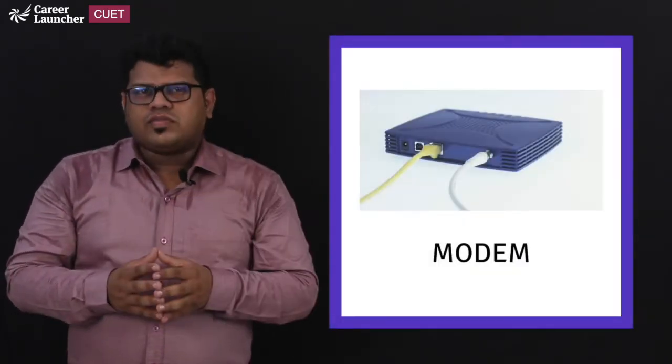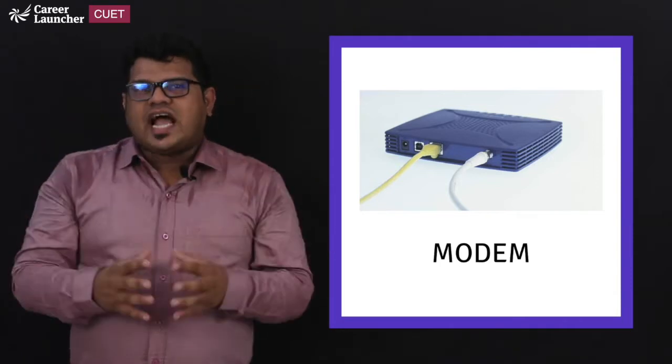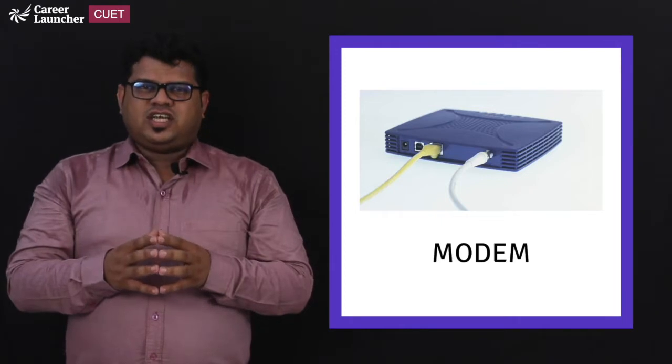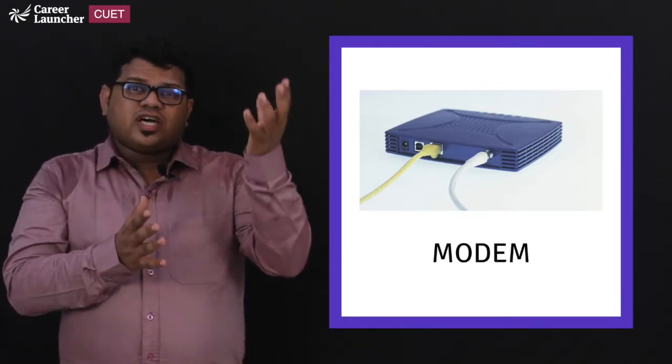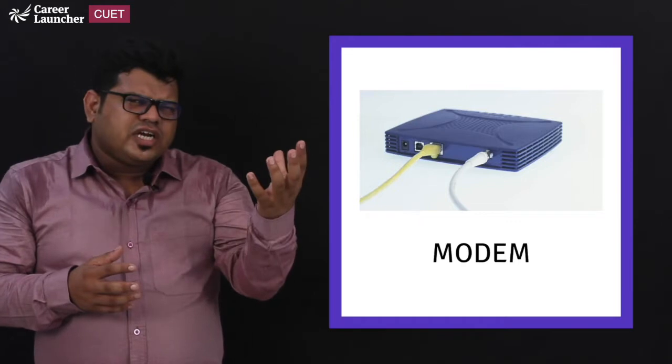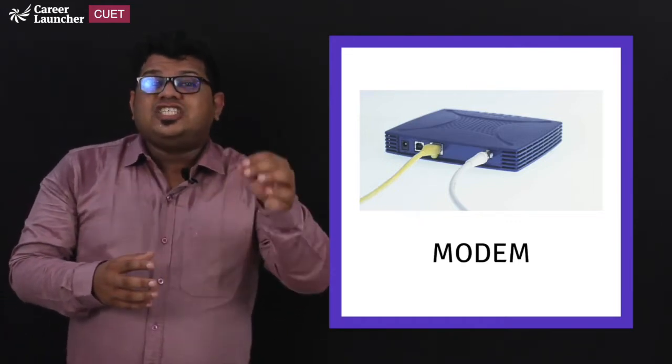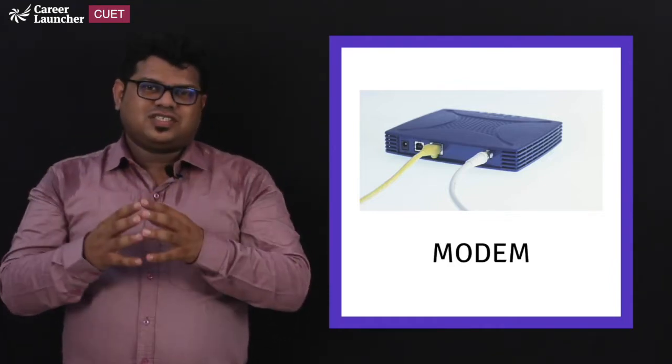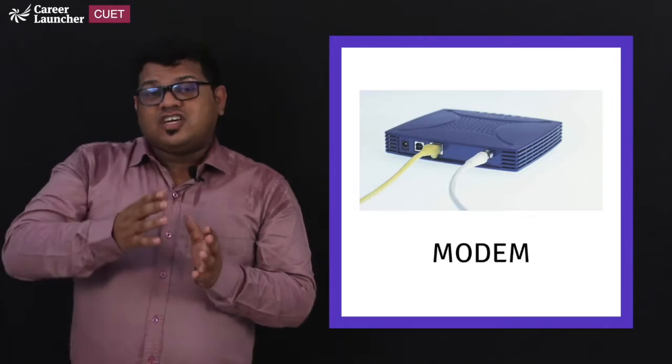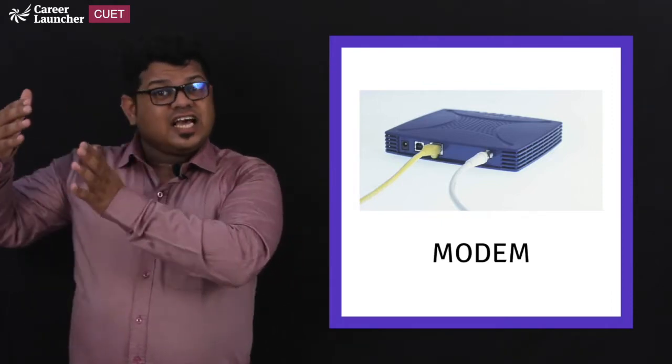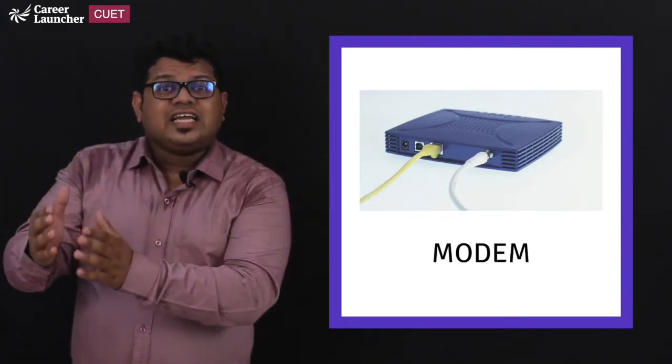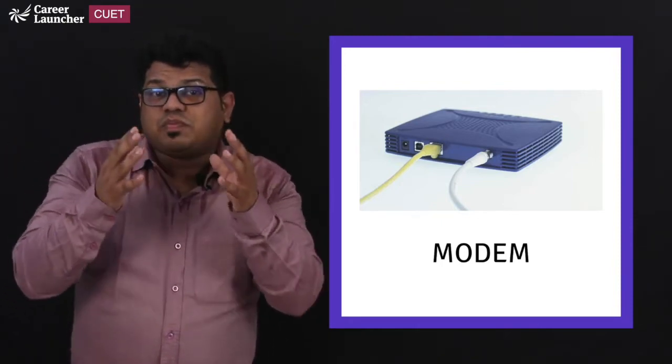Modem. If you look into modem it is abbreviated as modulation and demodulation. So it is a device that is going to convert the data from the computer, which will be in the digital form or binary form which is zeros and ones. So this will be converted to analog signal, transmitted, and at the receiver's end it is going to again convert back to its digital form and this process is done using this modem.